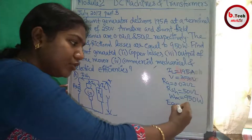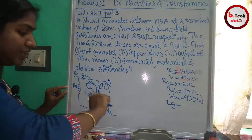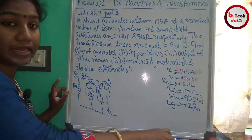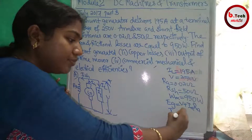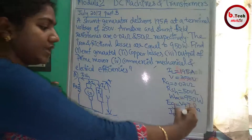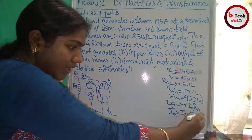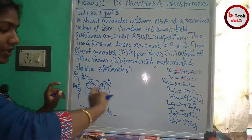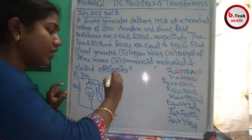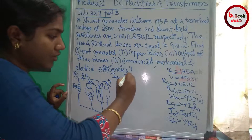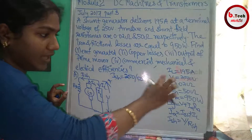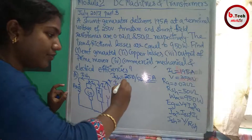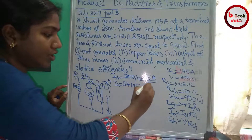The generated EMF equation for a shunt generator is: Eg = V + Ia × Ra. First, find the shunt field current: Ish = V / Rsh = 250 / 50 = 5A. Then armature current Ia = IL + Ish = 195 + 5 = 200A.